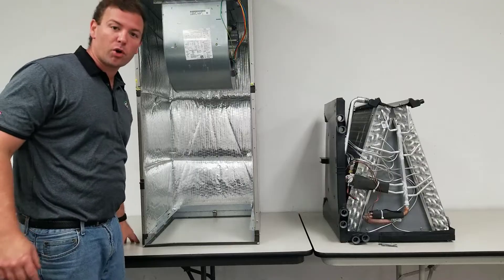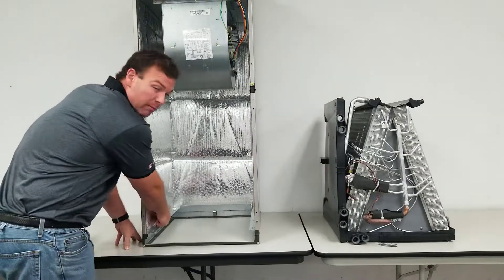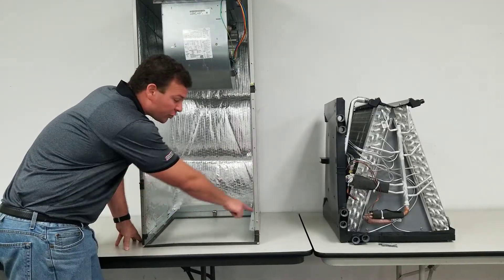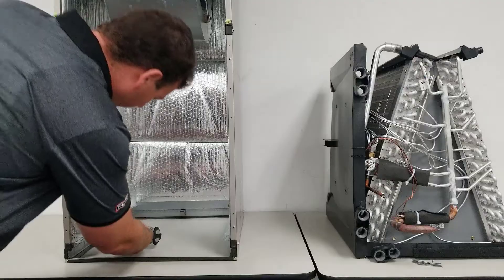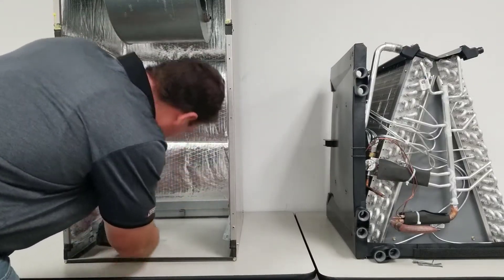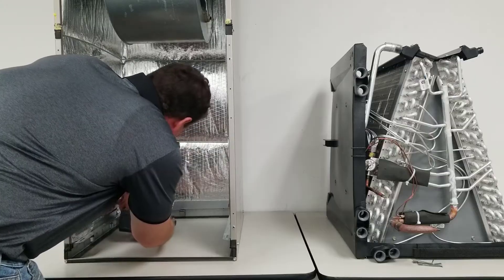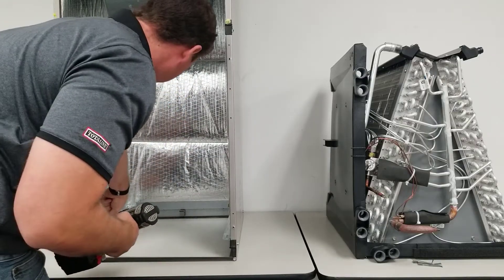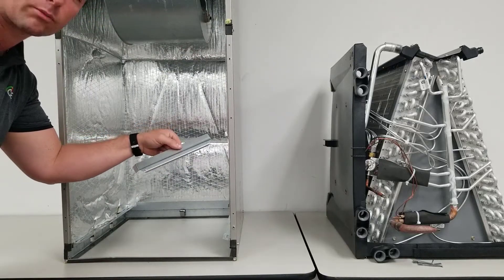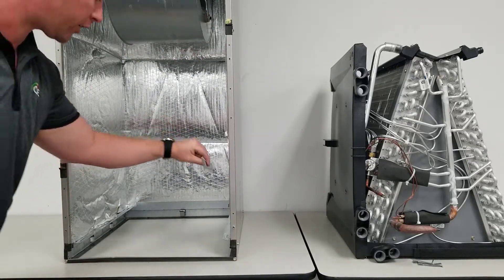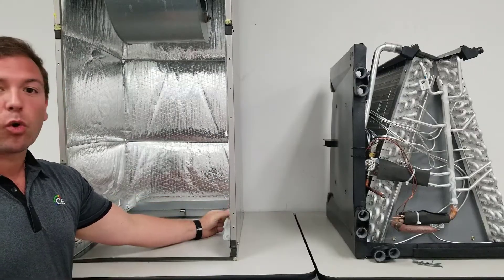You must also move the drain pan support bracket from the left side to the right side of the cabinet. Drain pan support bracket goes to the right side of the cabinet, the horizontal right.